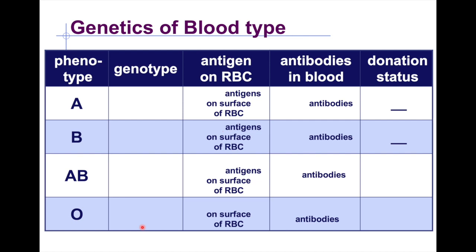Let's determine the different genotypes and phenotypes of the blood types — what kind of carbohydrate is found on the surface of the red blood cells and what antibodies are present. For blood type A, the antigen found on the surface is type A. Therefore, your white blood cells will have antibodies that counter type B, meaning you cannot receive type B blood.